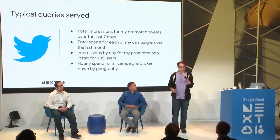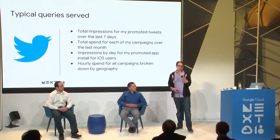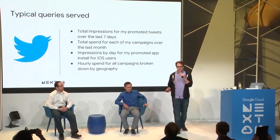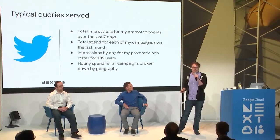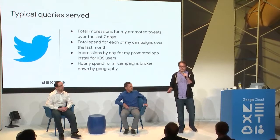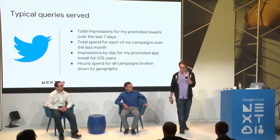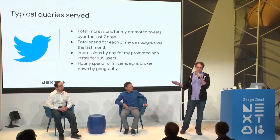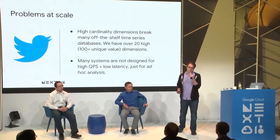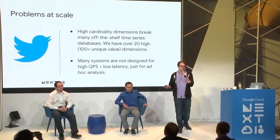The queries we serve include things like: give me all impressions my promoted tweets generated over the last seven days; show me campaign spend over the last month summed together; give me impressions by day for only app installs by iOS users. We can break queries down and segment them in many ways — like hourly spend broken down by geography. These requirements create scaling problems for off-the-shelf systems.